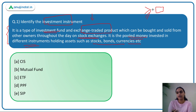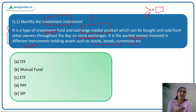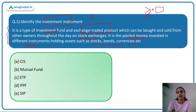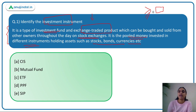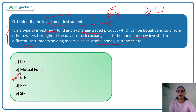This instrument is more or less like a mutual fund because the money is pooled and invested in different instruments. But a mutual fund can only be bought from the issuer at end-of-day value — it is not traded on the exchange throughout the day. That is what differentiates this instrument from the mutual fund. The instrument being talked about is the Exchange Traded Fund — ETF. Answer is option C.